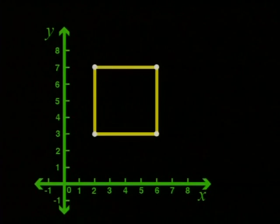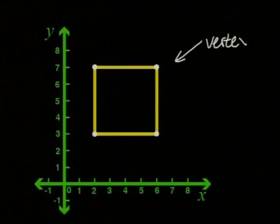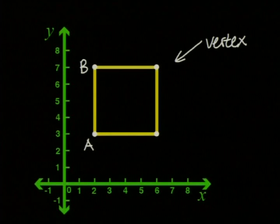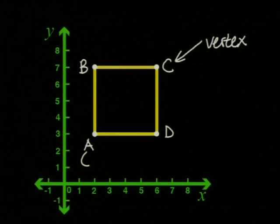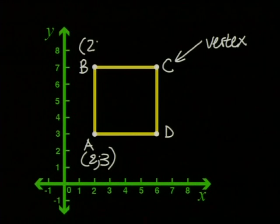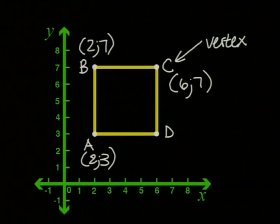Now you'll see why we call this coordinate geometry. I can take any shape and put it on the plane. Each corner of the shape is called a vertex. We are going to label each vertex A, B, C, and D. We can tell someone exactly where this shape is by writing down the coordinates of each vertex. A is (2; 3), B is (2; 7), C is (6; 7), and D is (6; 3).